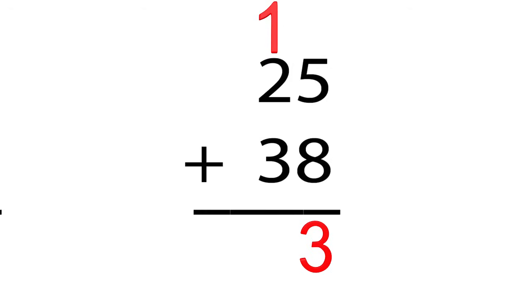Great job so far. Now we need to add the tens column. We have 1 plus 2 plus 3. What does that equal? 6. Great job. So we put the 6 down here in the tens column. So what is the answer to 25 plus 38? The answer is 63. Amazing job guys. Keep practicing with the rest of these problems and you will go far.